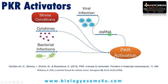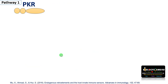PKR is primarily activated by double-stranded RNA from viral infection. Recent studies suggest that stress conditions also activate PKR. Cytokines can activate PKR other than viral pathogens, and bacterial infections — especially lipopolysaccharides of bacteria — can also activate PKR. Now let us see three important pathways mediated by PKR.